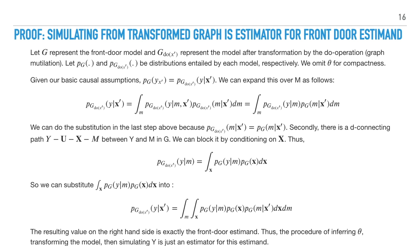We drive this intuition home with this front door example by showing that simulating from the transformed graph is indeed an estimator for the front door estimate. We show this by taking the probability distribution of Y given x prime on the transform graph and expanding it out until we see that it's equivalent to the front door estimate. Therefore the procedure of training theta, transforming the model, and simulating Y is just an estimator for this estimate.